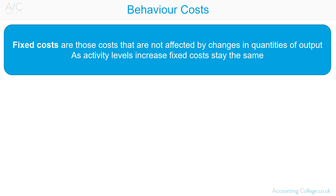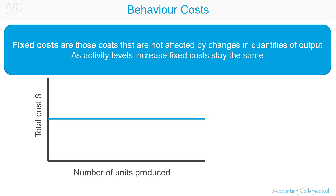Fixed costs are those costs that are not affected by changes in quantities of output. As activity levels increase, fixed costs stay the same. The best example of a fixed cost is a factory's rent — no matter how many units a factory produces, the rent costs are the same. A graph of fixed costs shows costs remaining constant regardless of how much the activity level increases.